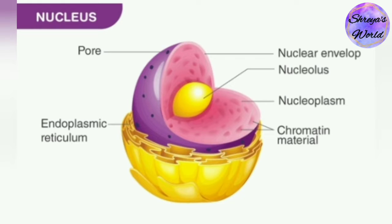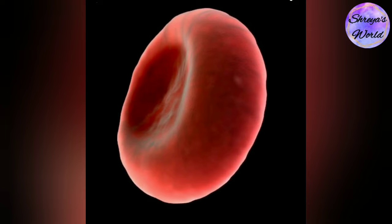In cell biology, the nucleus is a membrane-bound organelle found in eukaryotic cells. Eukaryotes usually have a single nucleus, but a few cell types, such as mammalian red blood cells, RBCs or erythrocytes, have no nucleus.